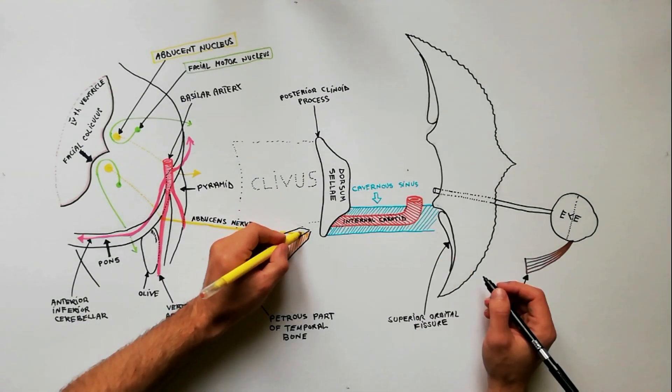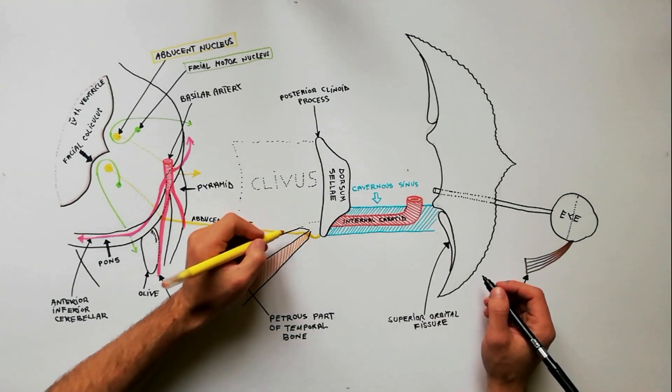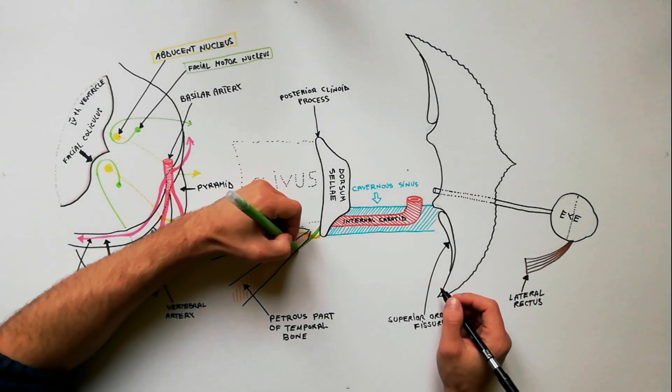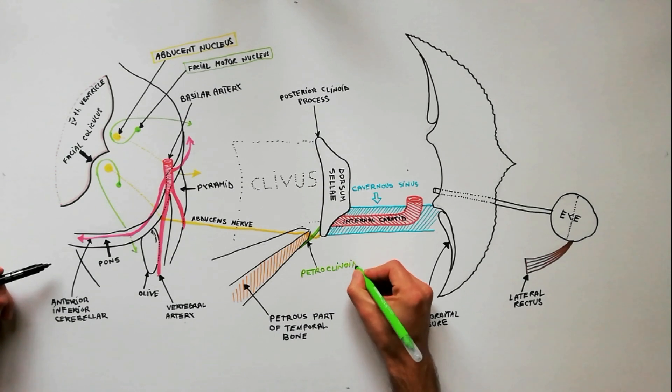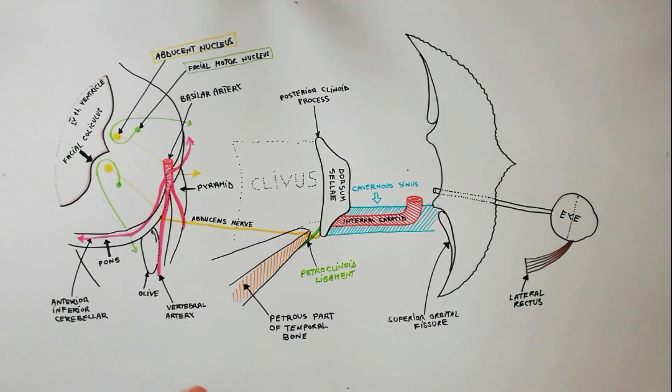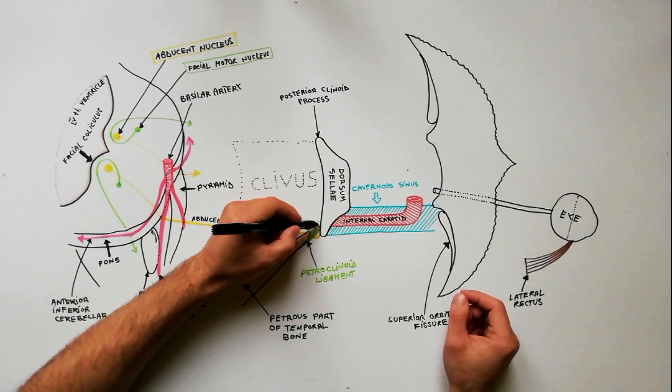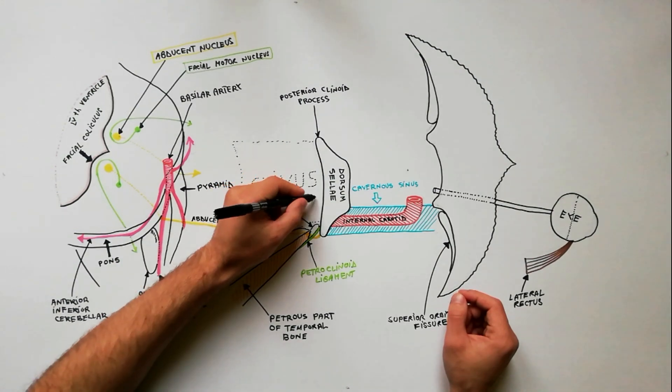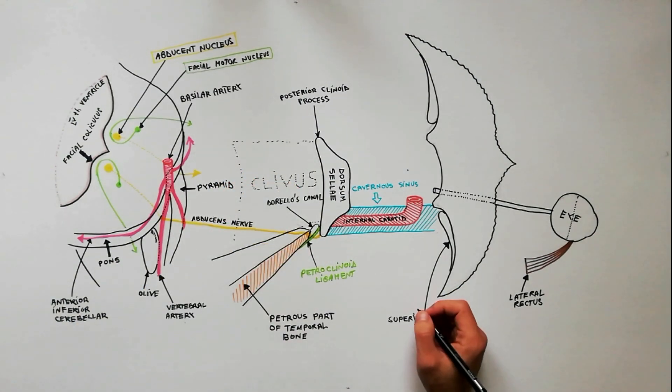It then arches forward directly over the sharp ridge of the petrous temporal bone, under the petroclinoid ligament, and enters the fibro-osseous canal called Dorello's canal. This canal is formed by the apex of the petrous temporal bone and the petroclinoid ligament.